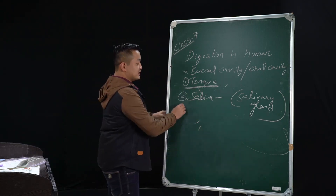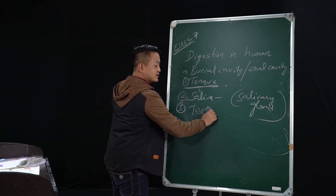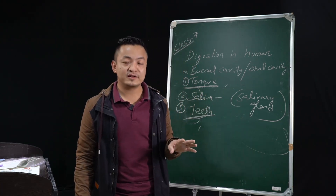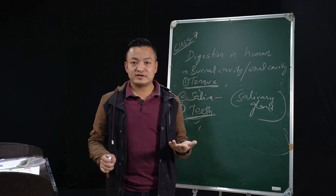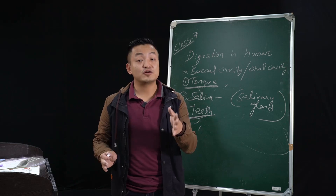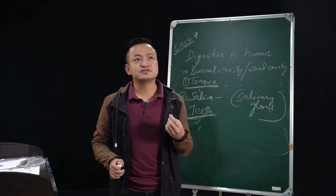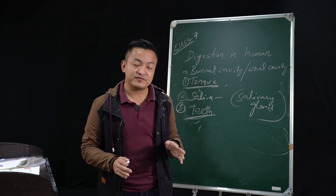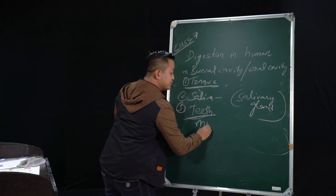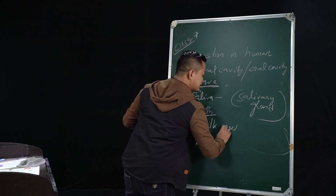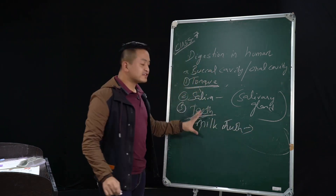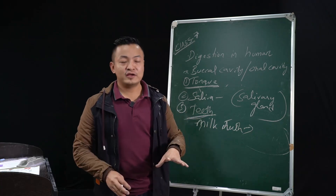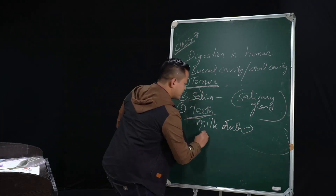Now let's talk about the teeth. We have two sets of teeth. The first teeth are called milk teeth, which develop maybe at six or seven months — it varies. These milk teeth are then replaced by permanent teeth.